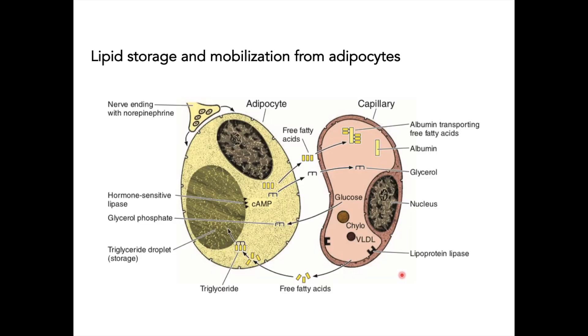For lipid storage and mobilization: the storage form of fat is triglycerides. Triglycerides are transported by blood and lymph from the intestines and liver through chylomicrons and VLDL. Chylomicrons carry the exogenous source of triglycerides, while VLDL is the endogenous source. Adipocytes are closely associated with capillaries because they are important in metabolism.